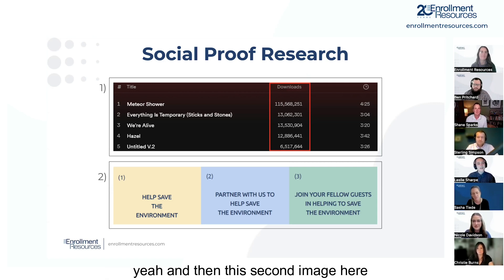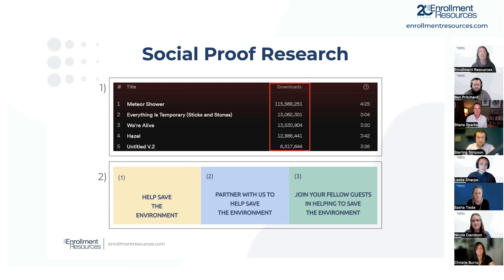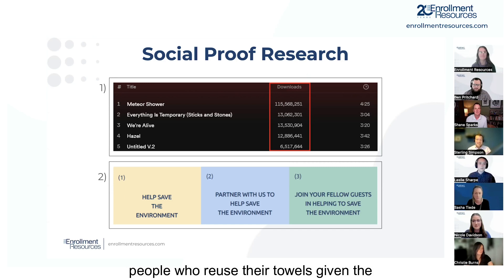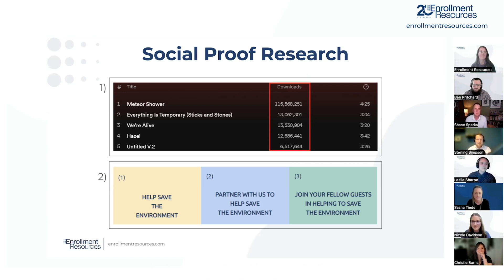A second experiment was done by Robert Cialdini, who coined the term social proof. This was done in a hotel where guests were asked to reuse their towels. In the room there were pamphlets with one of three different headings. He studied which heading was most effective in getting guests to reuse their towels — you can guess in the Q&A which one worked best.